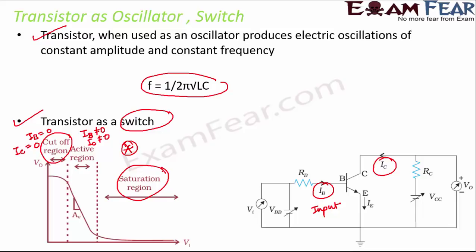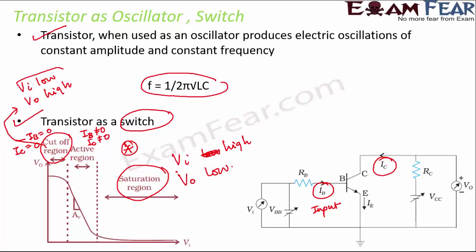In the cutoff region, input voltage is very low and output voltage is very high. Because of these two contrasting behaviors — cutoff (off/0) and saturation (on/1) — the transistor behaves like a switch. The switching circuit must be designed to keep the transistor out of the active state.